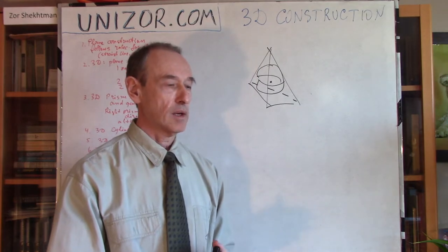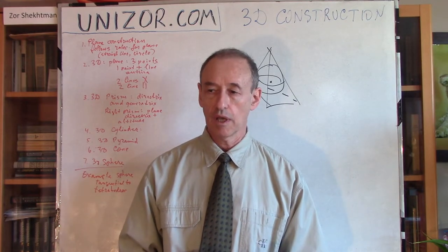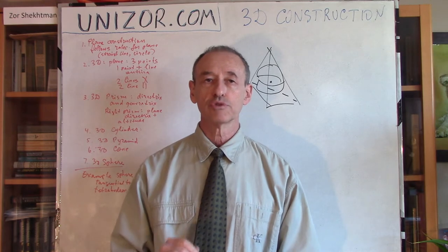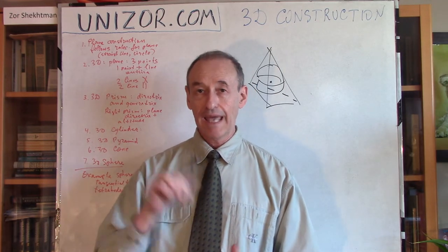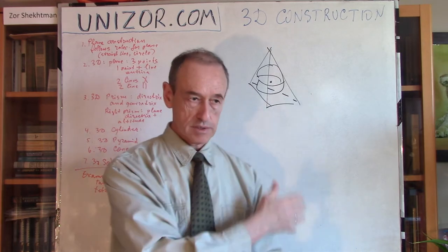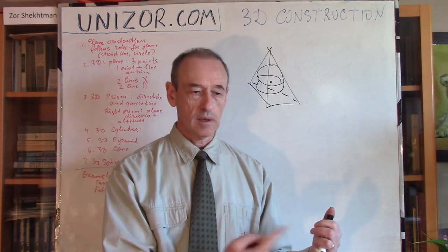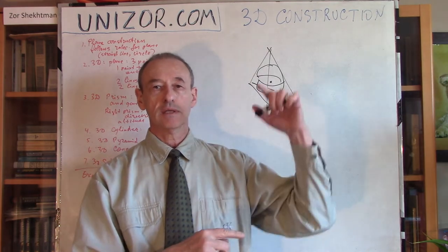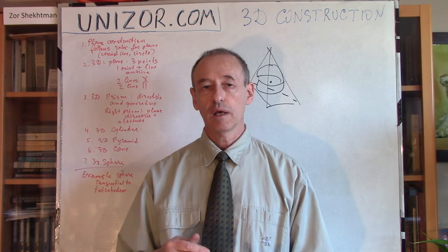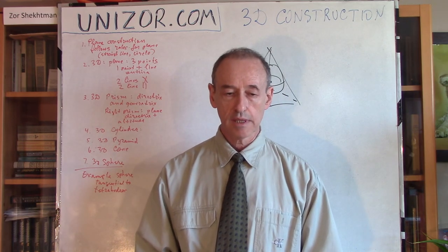That's basically the approach I would like to take with all construction problems in 3D. You don't really have to draw it in 3D space, because it's kind of difficult. What you do have to do is establish a sufficient number of elements of a 3D figure that define this object uniquely. For a sphere, it's a center and a radius. For the right circular cylinder, it's the circle in the base plane and its height. I will use this particular approach when solving all the different construction problems in the future. Thanks very much, and good luck!